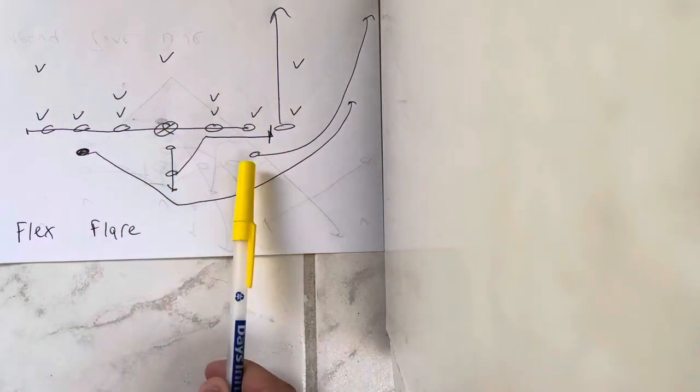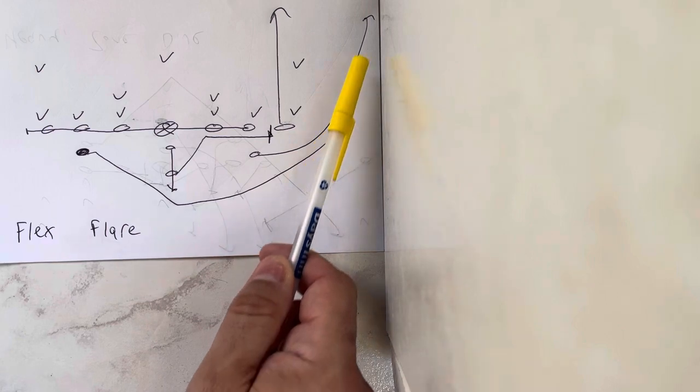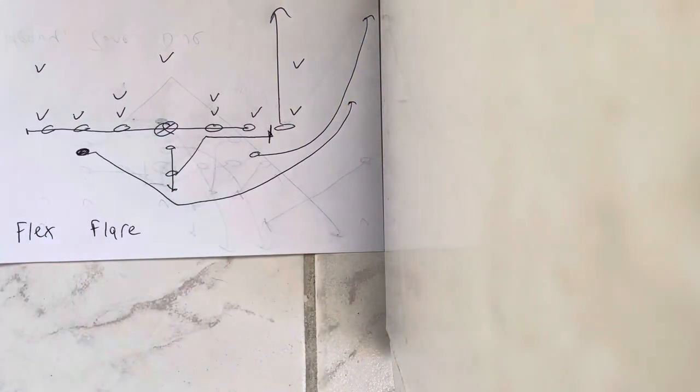The receiver's going to run a vertical. The A-back's going to take three steps, run 45 degrees and wheel up the numbers.